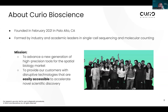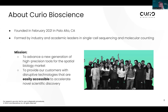For those of you who aren't familiar with Curio, we are a very young company founded just a few years ago in February of 2021, based in Northern California. We have a lot of industry and academic leaders in the single cell and molecular accounting space who founded our company. Our mission is to advance a new generation of high precision tools for the spatial biology market, and to make these tools easily accessible to accelerate your novel scientific discoveries.